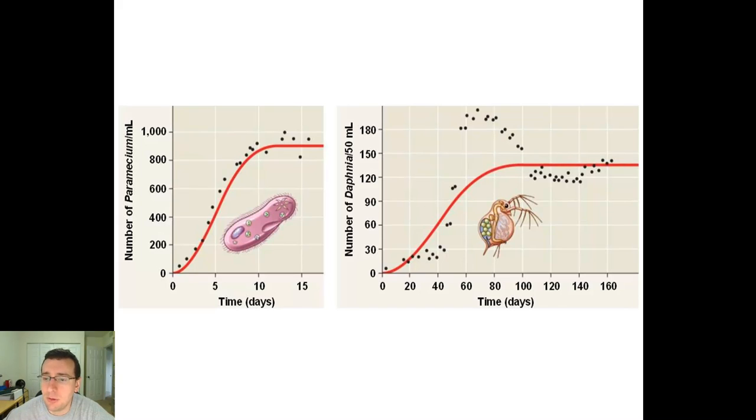Now, one example of population dynamics that is very common is the idea of the S-curve, or logistic growth pattern. Notice that these two populations that they did in experiments here, one is this tiny microscopic animal that we call a Daphnia, and the other one is the Paramecium.